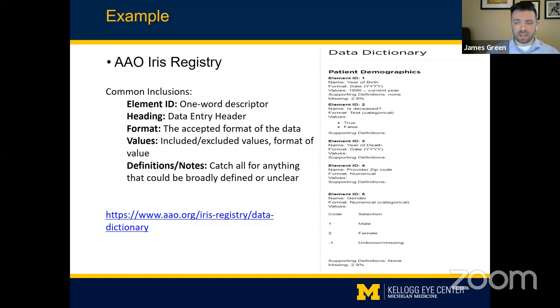So later when you're sorting through this data, instead of sorting through 'male' and 'female' you're sorting through one and two, and you're able to pick that up much more quickly. Then there are definitions — this is your free text area. If there's anything unclear or something that could be defined in many ways, you're going to want to spell out exactly what you're accepting or looking for. Does anybody have any questions on this so far?